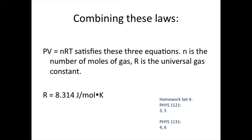Now we can combine all these laws into the ideal gas law. The ideal gas law can be written as PV is equal to nRT. This satisfies all three of those equations. In the ideal gas law, n is the number of moles of the gas, and R is the universal gas constant. R is equal to 8.314 joules per mole per Kelvin.